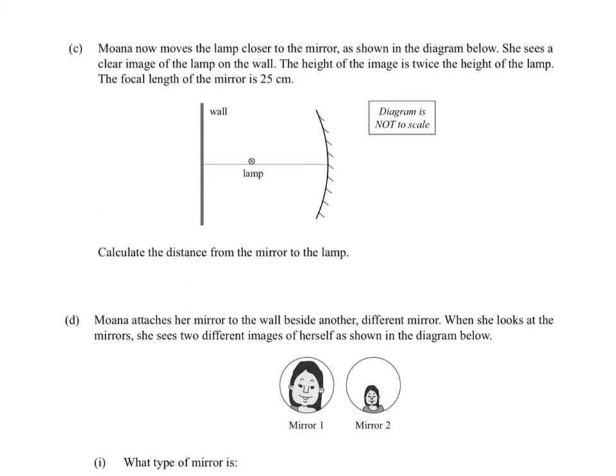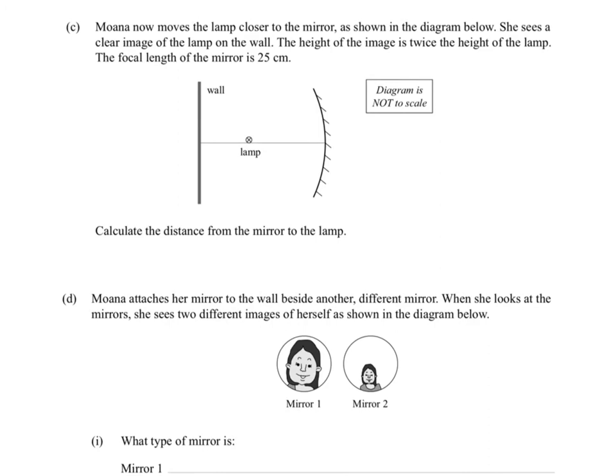Moving on. C. Moana now moves the lamp closer to the mirror as shown in the diagram below. She sees a clear image of the lamp on the wall. The height of the image, now this is going to be important. So I think we should take note of some of these details. The height of the image is twice the height of the lamp.